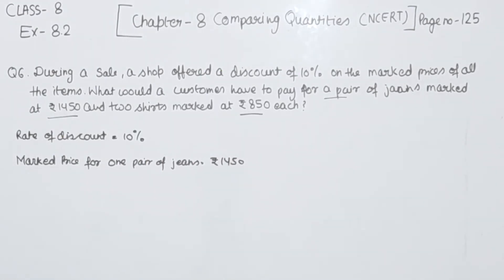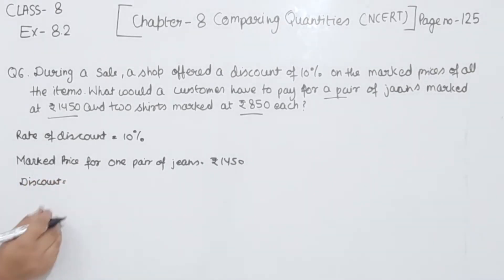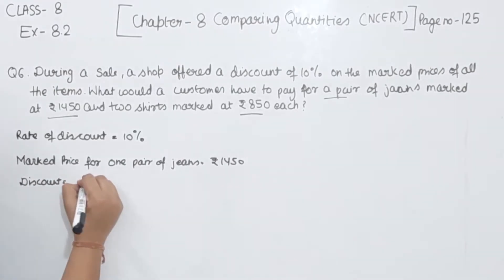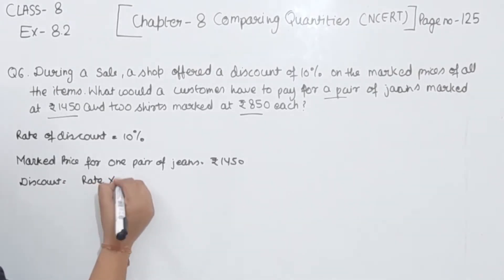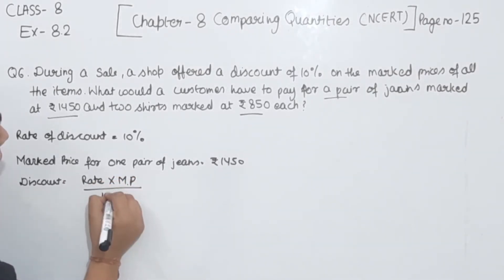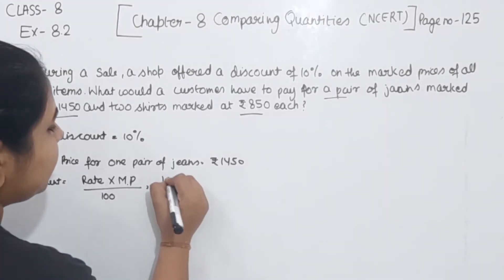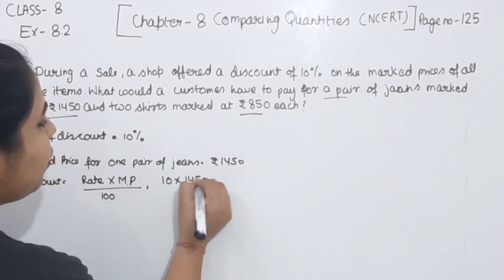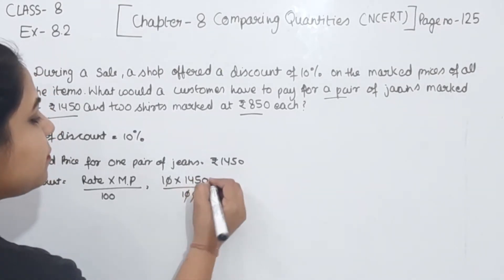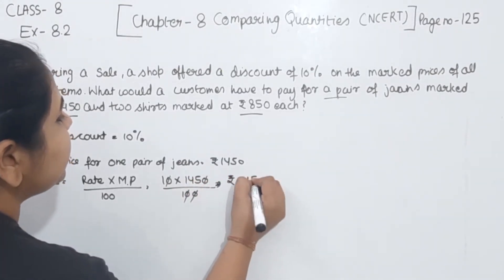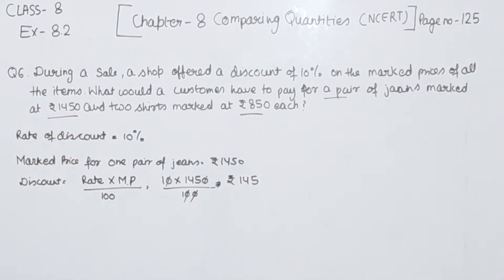Now we find the discount for the jeans. The formula is: Discount = (Rate × Marked Price) / 100. So discount = (10 × 1450) / 100. The zeros cancel, giving us a discount of ₹145 for the jeans.